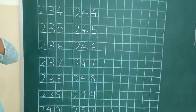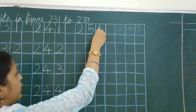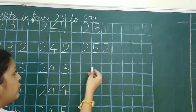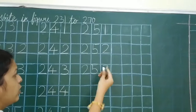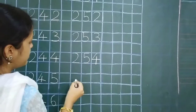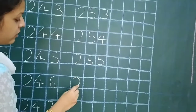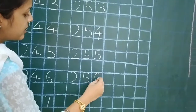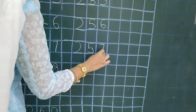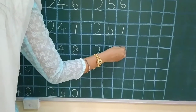Now let's write 251. 252. 253. 254. This is the 200s range. 255. 256. 257. 258.